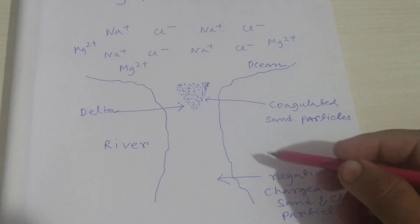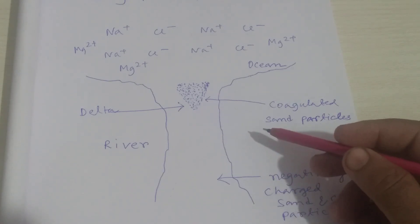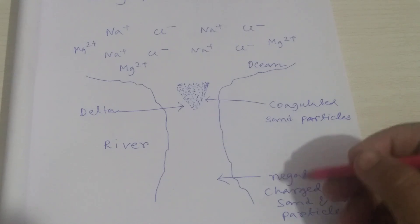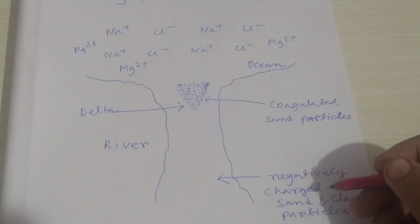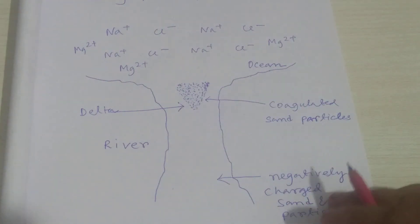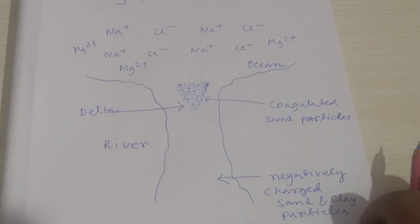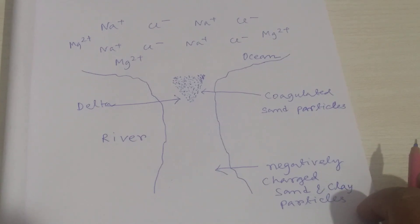In the electrolyte, the positive charge ions Na⁺ and Mg²⁺ coagulate the river water's colloidal particles, and as a result, a triangle-shaped land or delta is formed at the joining point of sea and river.